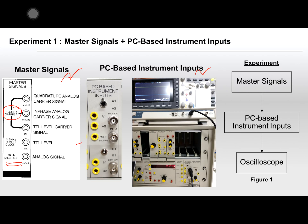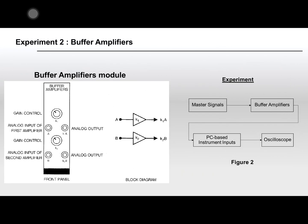The PC-based instrument input is basically used to display your signal on the oscilloscope. You just put your input signal here or here, connect your output to the oscilloscope, and then you will get the signal on the oscilloscope. In experiment one, try to connect any signal from the Master Signal Module and put it into the PC-based instrument input to display your signal on the oscilloscope.